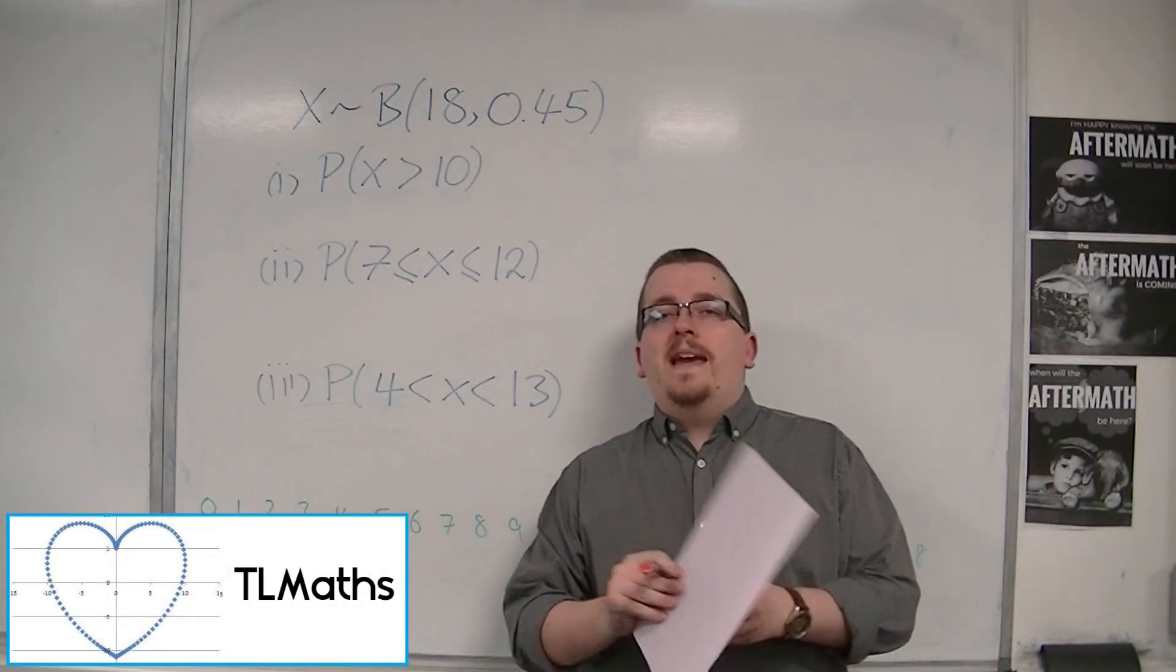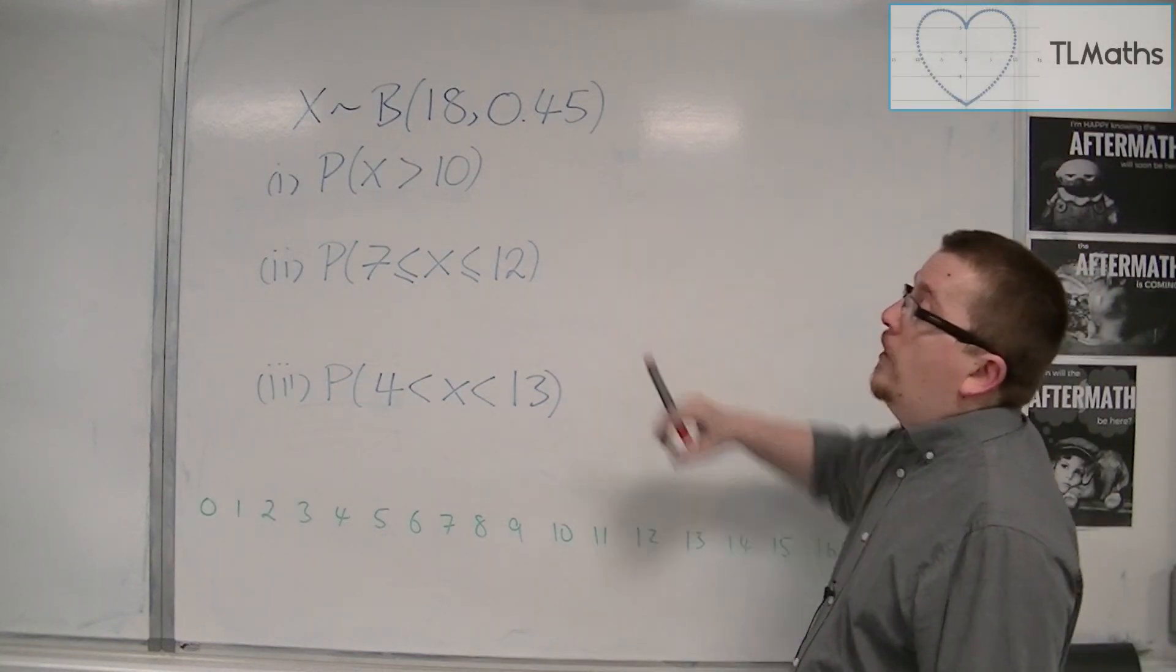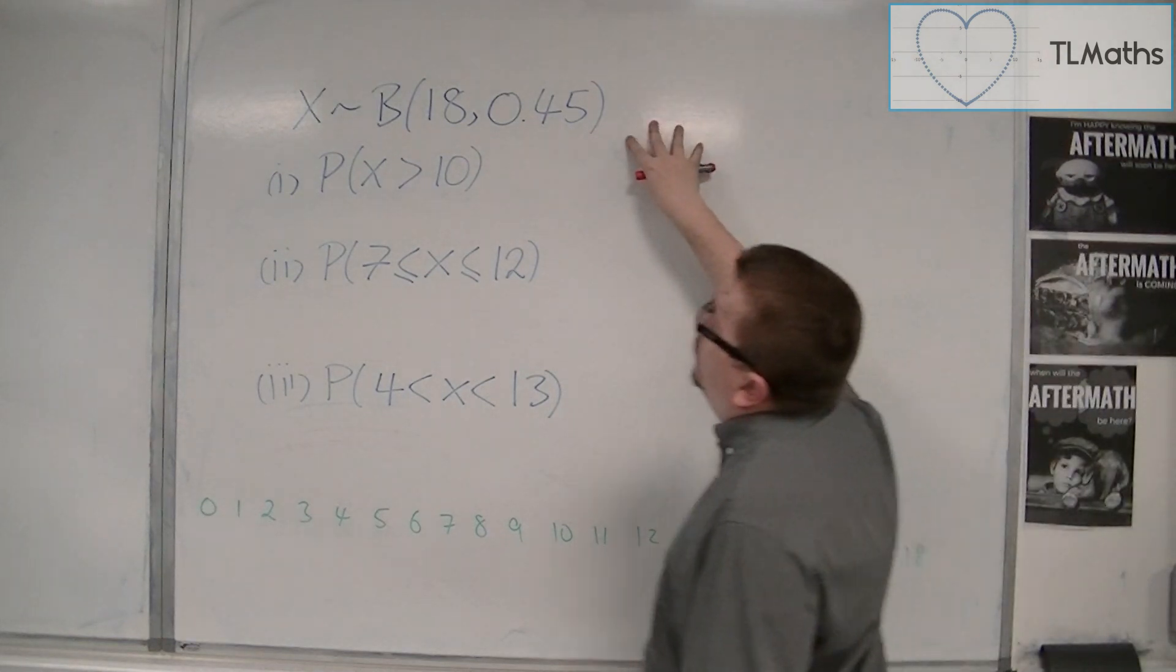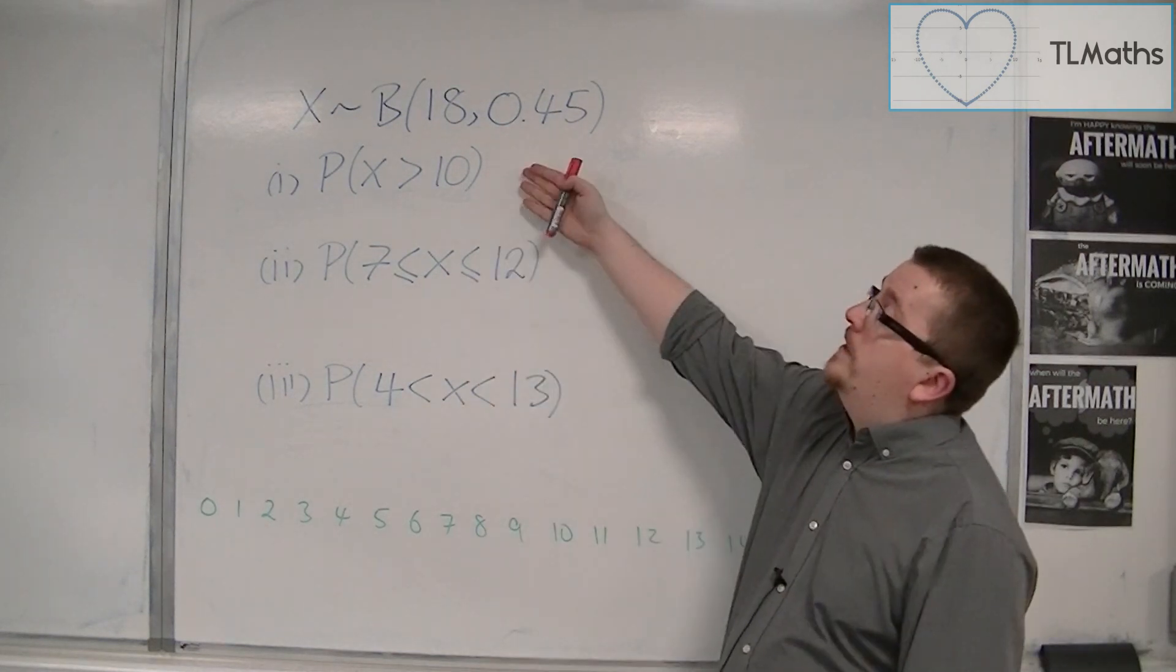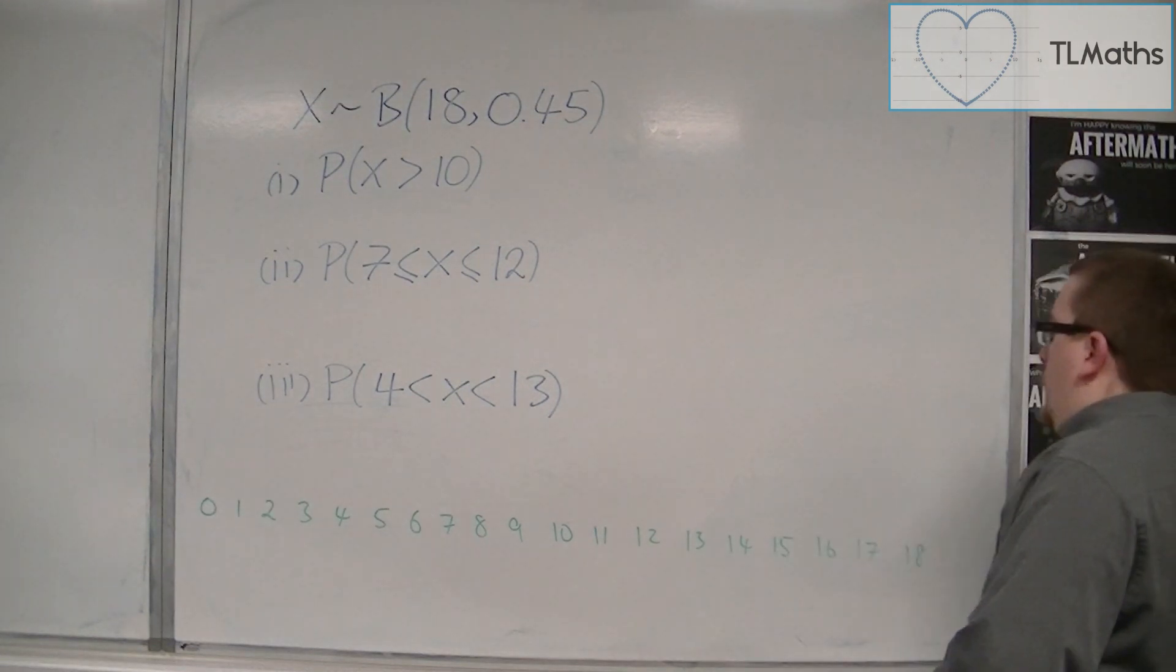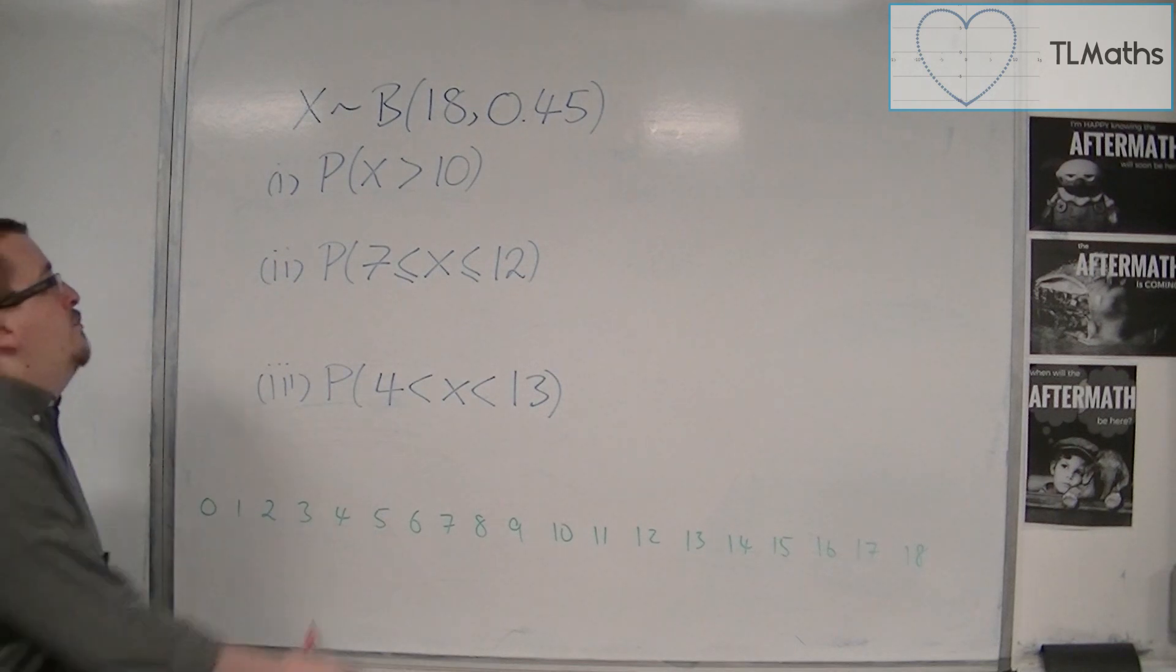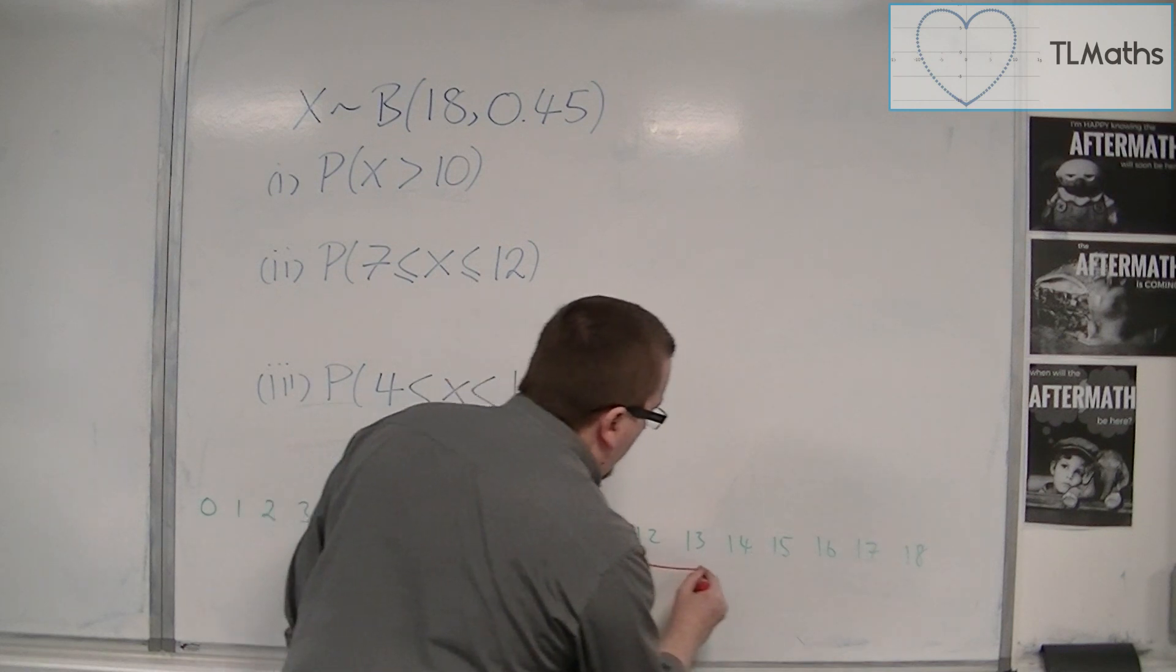It is important that you get used to using the binomial tables and are able to work out probabilities such as these. I want to show you a good way of doing this. Let's say we have a binomial distribution with an n of 18 and a probability of 0.45. First of all, we want to work out the probability that x is greater than 10. What I've done is I've written out all the possible values of x from 0 up to 18. If I want the probability of x being greater than 10, then I want greater than 10, so 11 upwards.